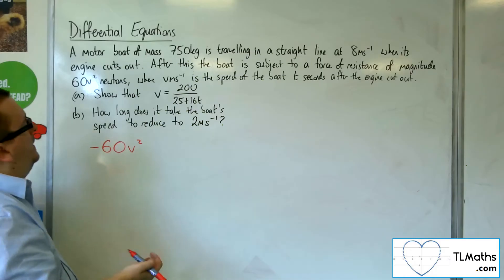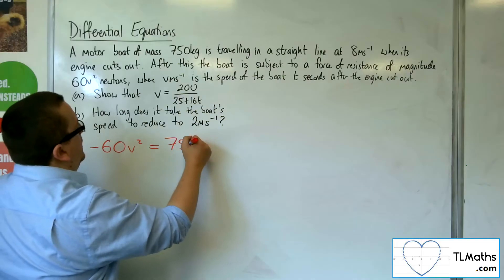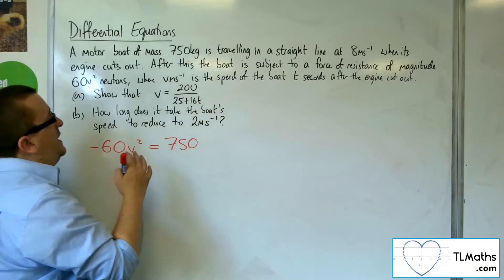So resolving horizontally, that's going to be equal to the mass times the acceleration, so 750 times the acceleration, which is DV by DT.